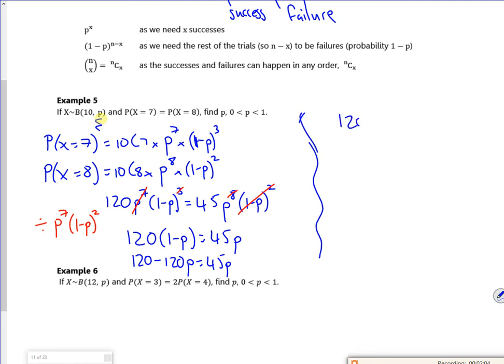So 120 is 165P, so 120 over 165 is P, which is 8 over 11 according to the pack. So that's using the formula, the nCr formula. You've got to be happy when using that formula and then thinking about what will cancel out.